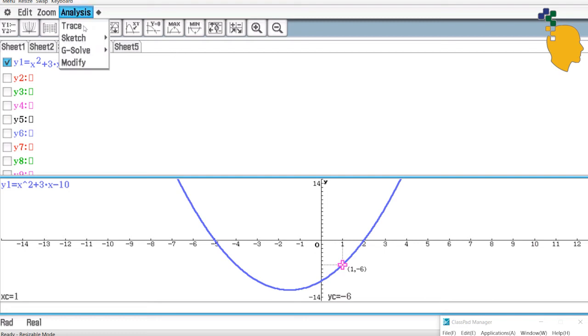How about the y-value when x is 3? Same process. Go to analysis, trace, and type 3. Click enter, and it'll move to the point where x is 3. So 3, 8 is the point where x is 3.